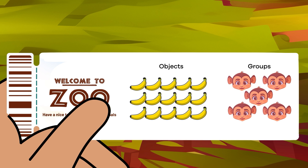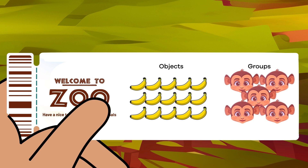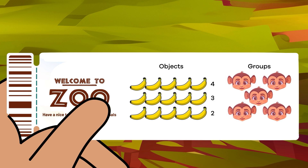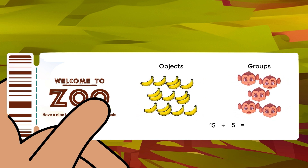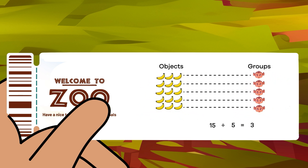Remember, that when you write a division problem, you start with the number of objects — bananas — first, and then the number of groups — monkeys — next. So, 15 bananas divided by five monkeys equals? If you said three, you're right.